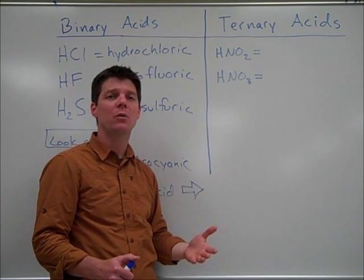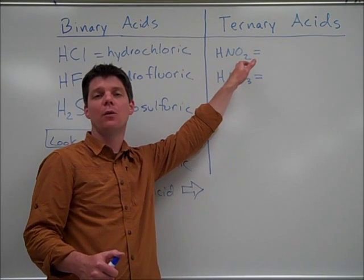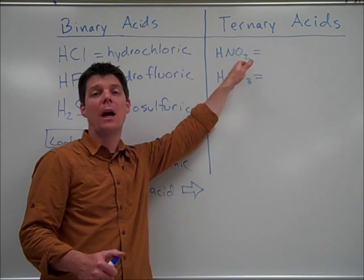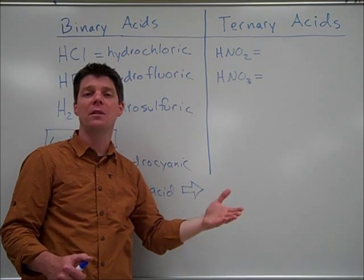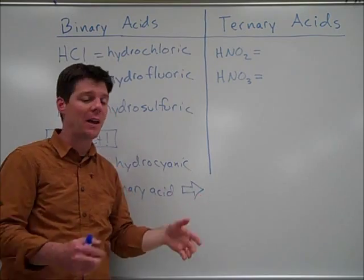So as you're naming acids, we need to remember the following conversion. The '-ite' ending for a polyatomic ion, such as nitrite, will convert to an '-ous' ending for the acid name. So HNO2 would be called nitrous acid.